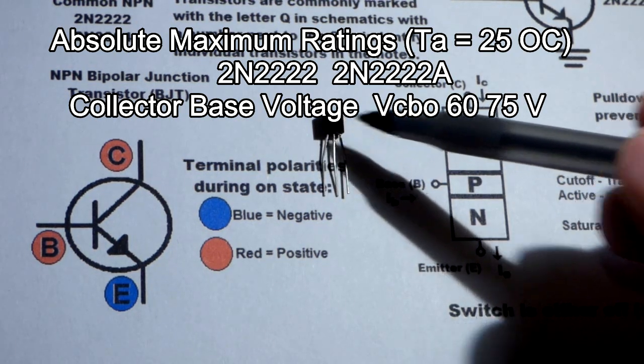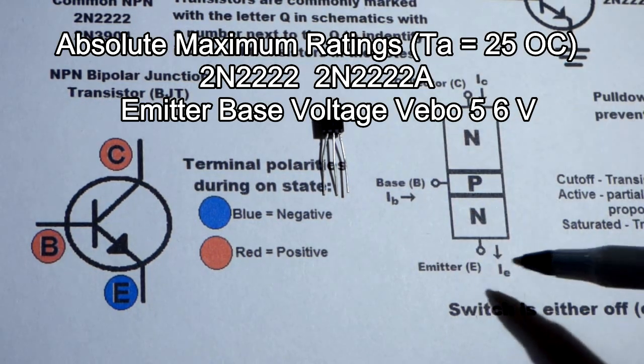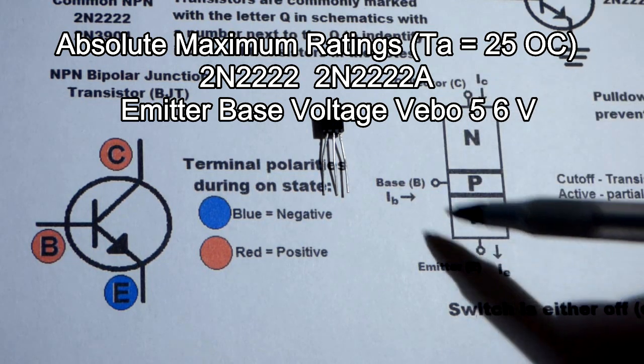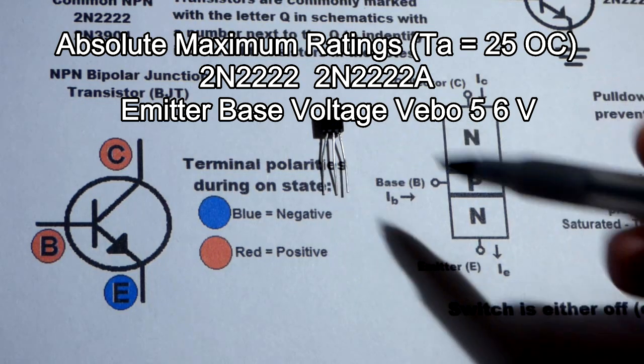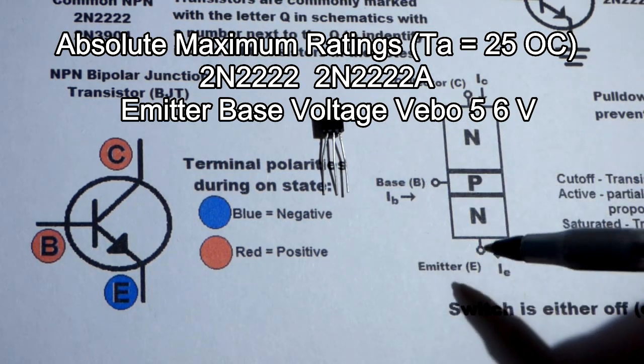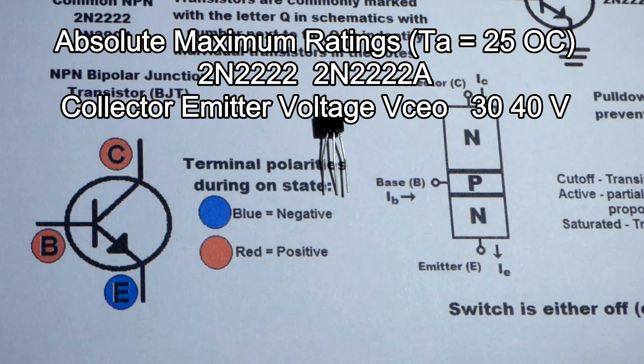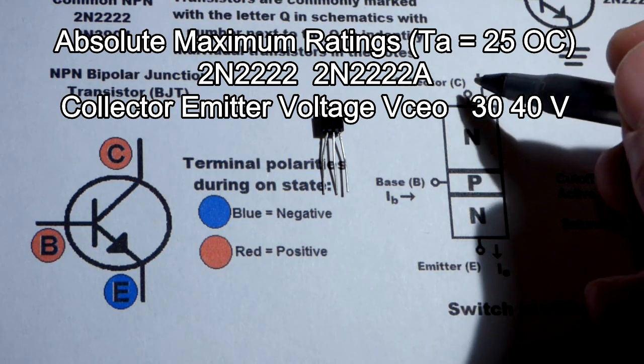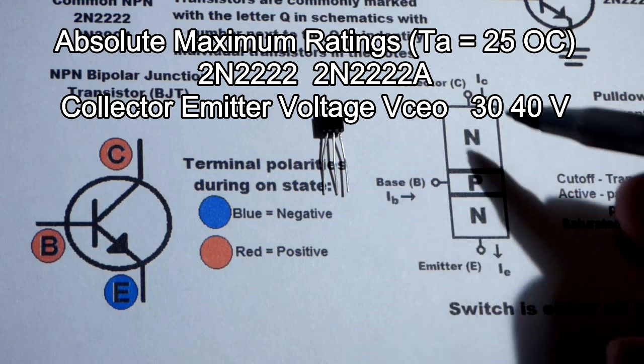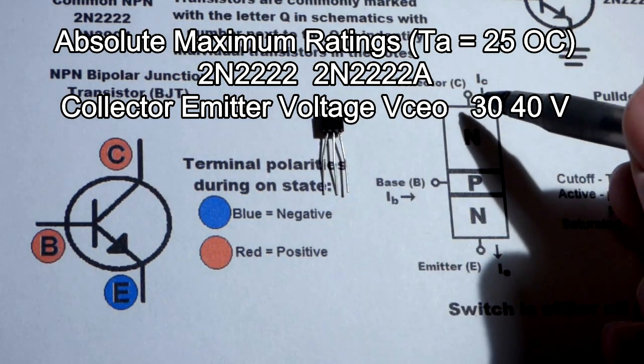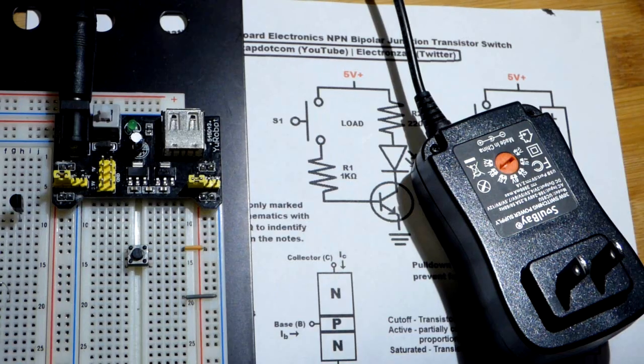So now, I did find a data sheet for the 2N2222 in the plastic package here. This is called the TO92 package, by the way, if it looks like that. And it says that collector to base, it can be 60 volts across there for the 2N2222. The 2N2222A, which we have here, can be 75 volts. Now, let's say you accidentally put it in backwards or whatnot, so that the emitter is more positive than the base. Then it's only 5 volts for the 2N2222 or 6 volts for the A version. Now, from collector to emitter, it's a 30 volt difference from collector to emitter for the 2N2222. For the 2N2222A, which we're using, we can have 40 volts from collector to emitter.